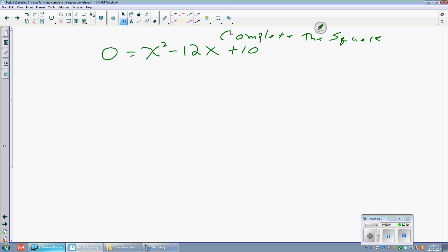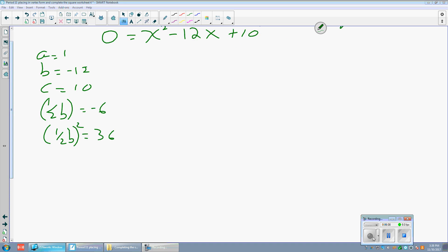Okay, let's see if you got the right answer. A is 1. B is negative 12. C is 10. Half of B is negative 6. Half of B squared is 36. We write down the equation, inserting half of B squared on both sides. We then factor it. The factor is half of B.